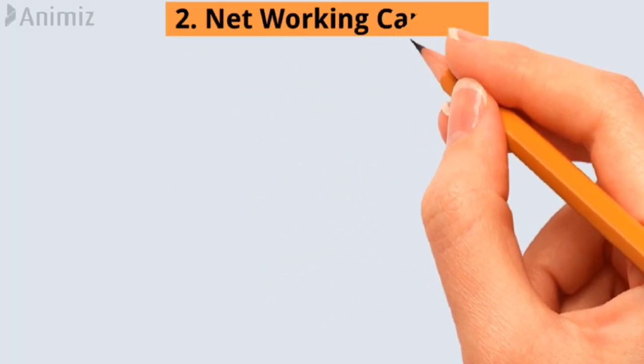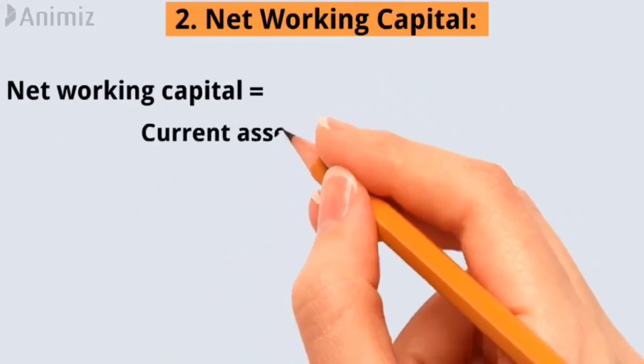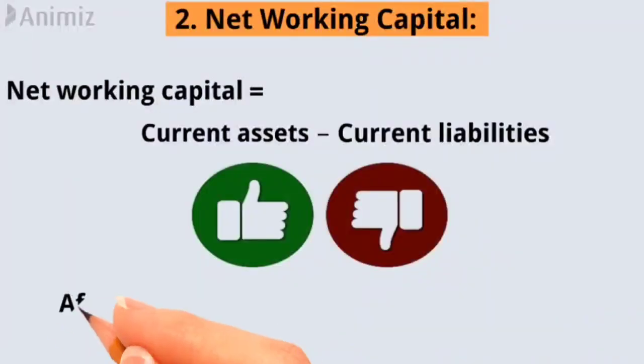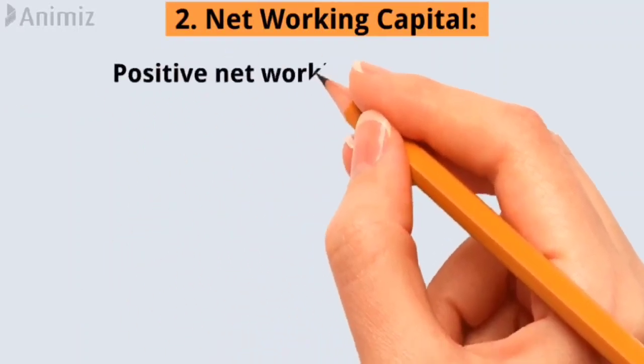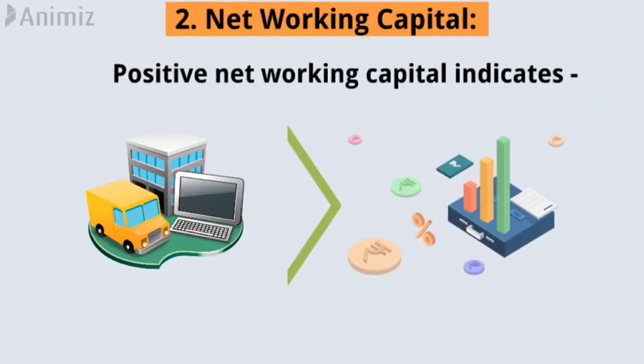Two, net working capital. Net working capital is calculated by subtracting current liabilities from current assets. It indicates the company's liquidity position after considering its short-term obligations. Positive net working capital indicates that the company has enough current assets to cover its current liabilities.